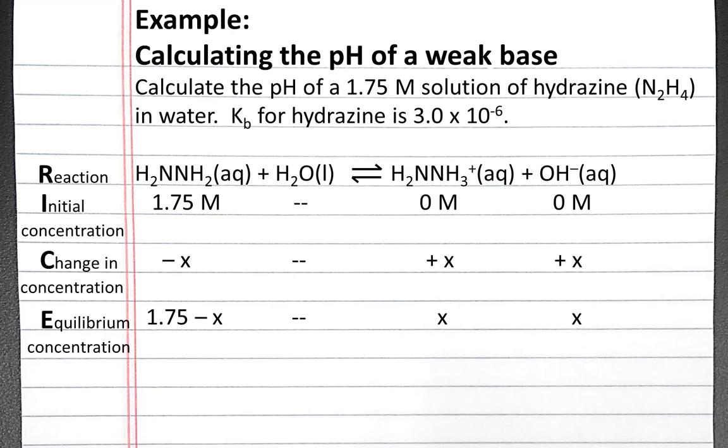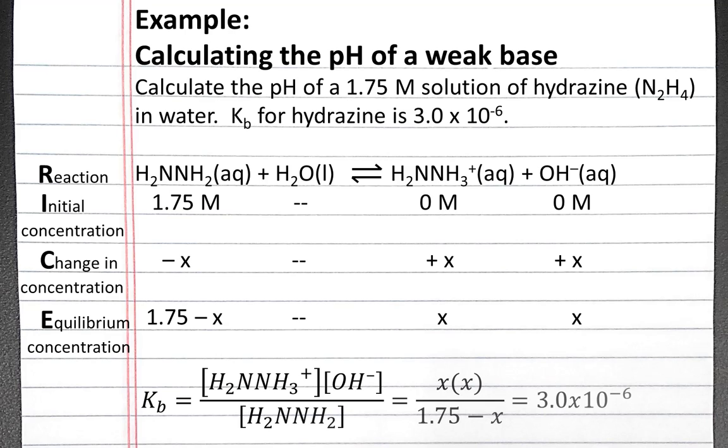Our next step is to write the equilibrium constant expression for this reaction, and we can plug in our values from the table. So the expression is Kb equals the hydrazonium ion concentration times the hydroxide ion concentration divided by the concentration of hydrazine.